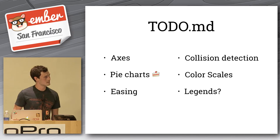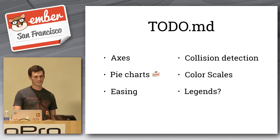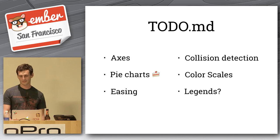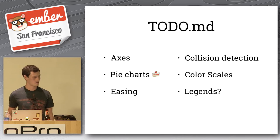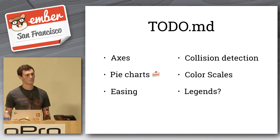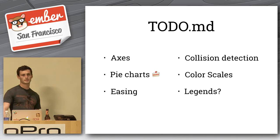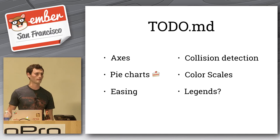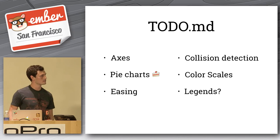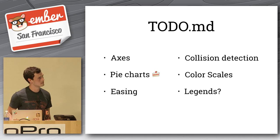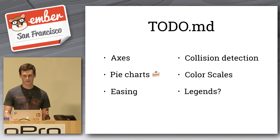Some things left on the to-do list: axes, which is fairly basic — I was hoping to get that merged this morning. Pie charts, easing and animations would be really nice, and colour scales will be great too — for example being able to plot temperature as blue-to-red on data points with interpolation in between. Legends are also fairly easy to put together. I've been impressed by how easy it has been so far and we're quickly getting to the point where we can produce some impressive visualizations.